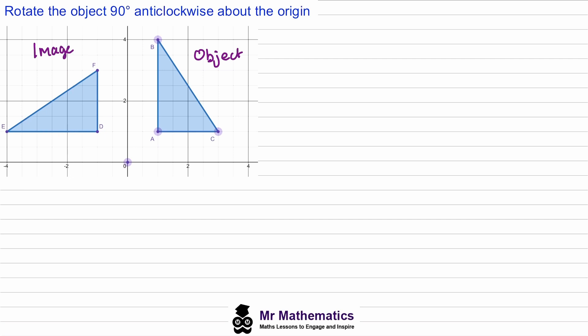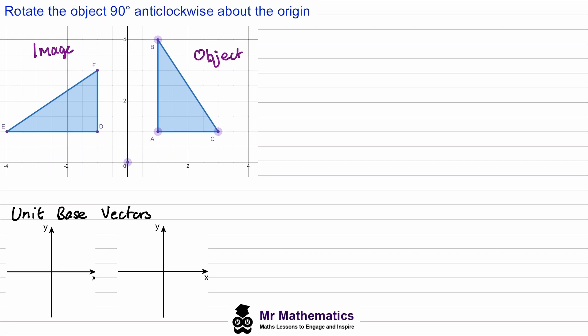When we apply the transformation matrix to the object, this is the image we should get. To create the transformation matrix we need to use what are called the unit base vectors, i and j. Vector i originates from the origin at coordinate (1, 0), and vector j originates from the origin at coordinate (0, 1).